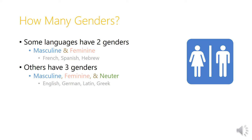Some languages have just two genders — masculine and feminine. This includes French, Spanish, and Hebrew. Other languages have three genders: masculine, feminine, and neuter. English, interestingly enough, falls into this category, although we use the neuter gender for everything that's not a person — anything that's an inanimate object. German, Latin, and Greek also have these three genders — masculine, feminine, and neuter — but they extend the masculine and feminine genders to cover all kinds of inanimate objects that we would consider neuter.